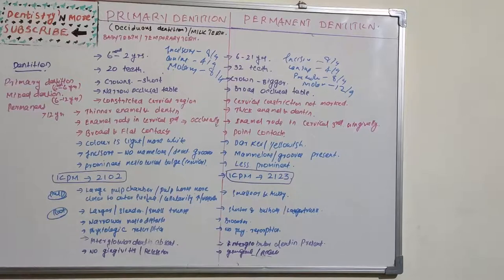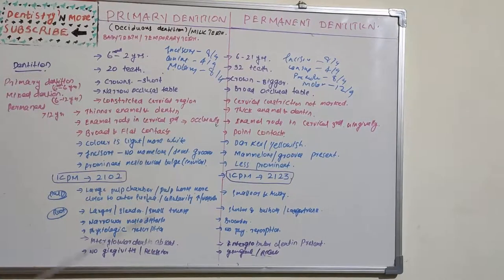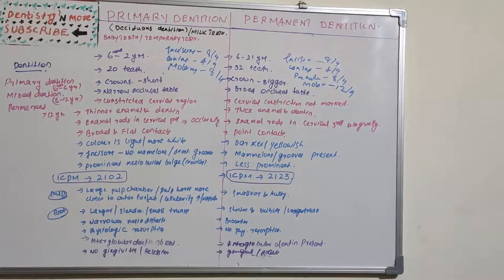There is not much gingivitis or recession — that is, periodontal problems — in primary dentition; they are mostly absent. However, these are very evident in permanent dentition. This covers some of the key differences. We can also make a tooth-wise comparison under each tissue category: enamel, dentine, pulp, cementum, and periodontal ligament, and most of these differences have been included.